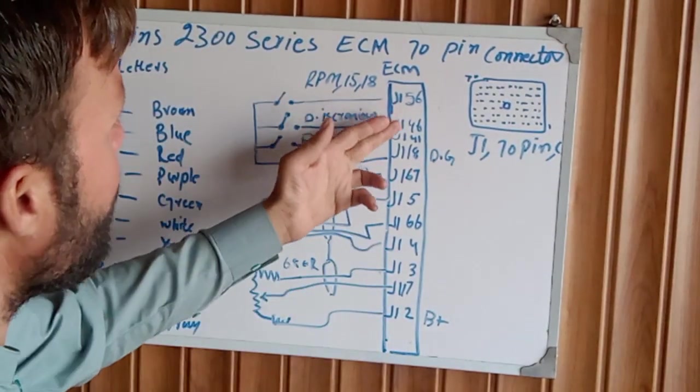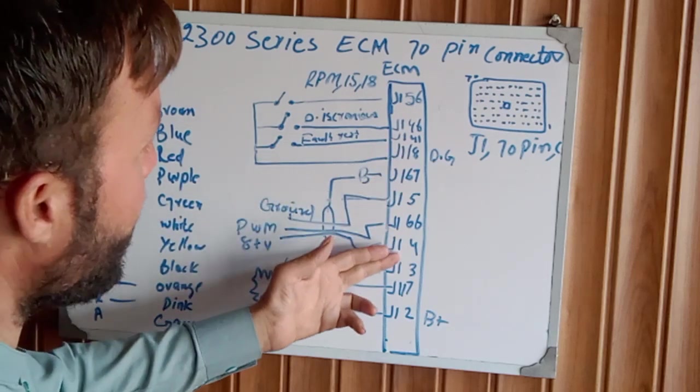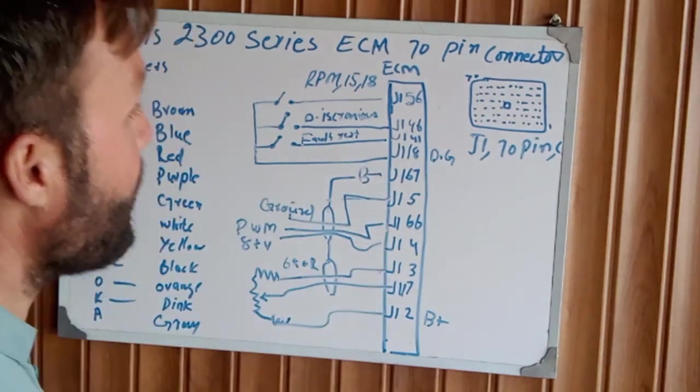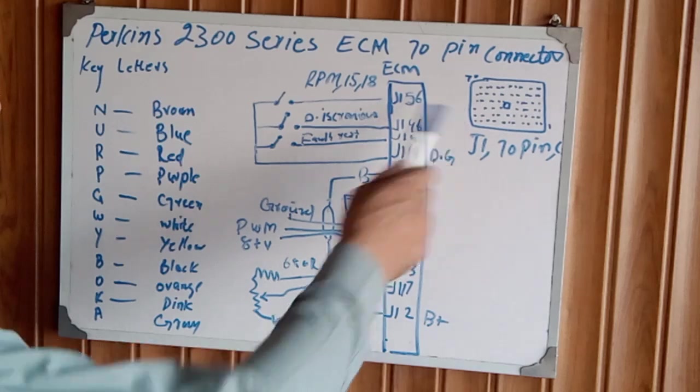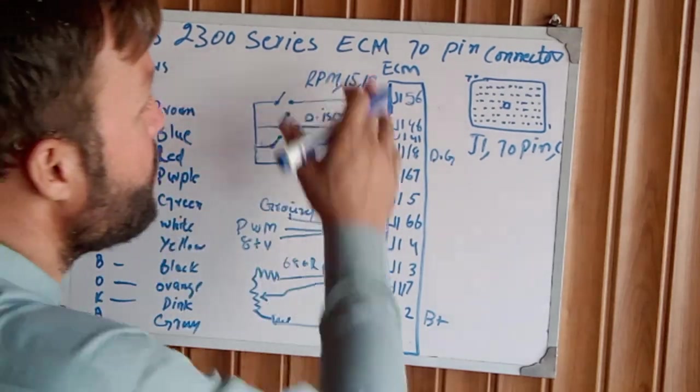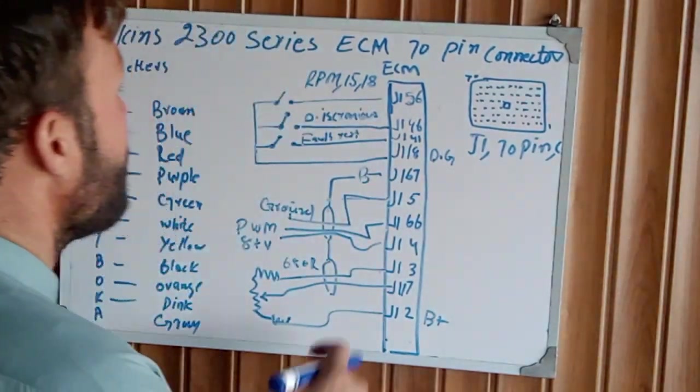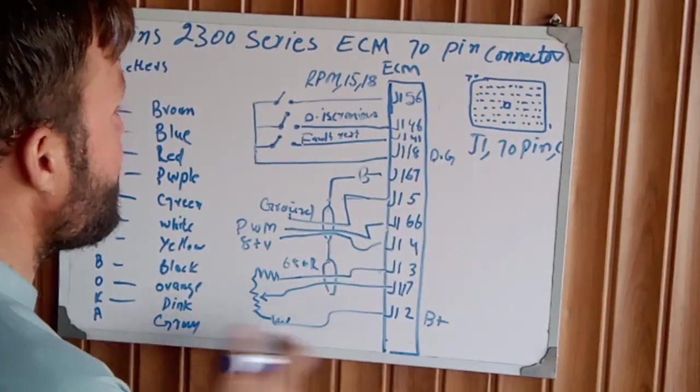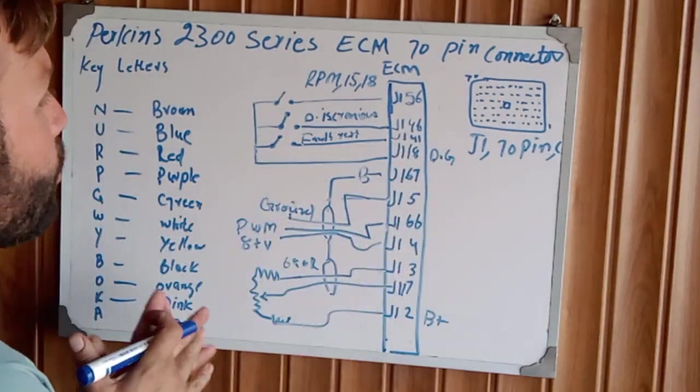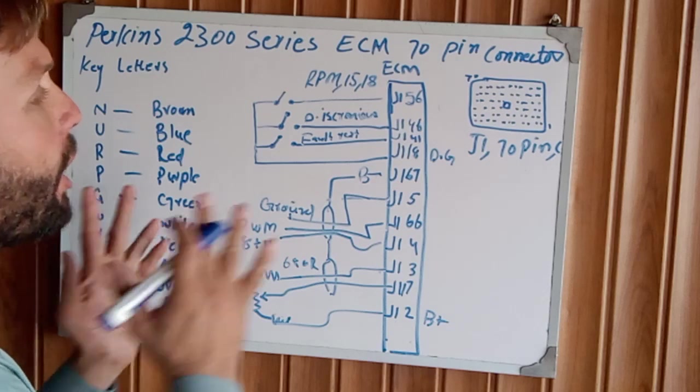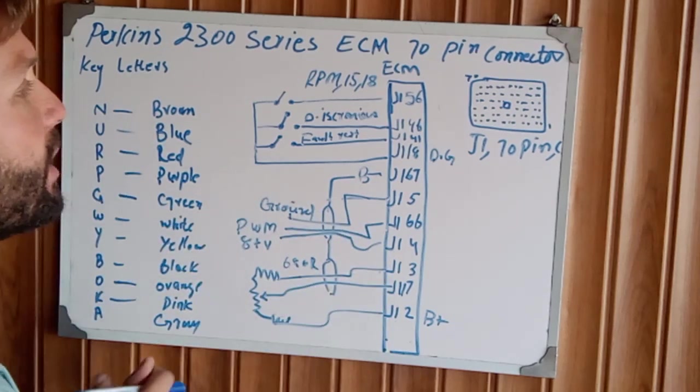We already explained 13 pins in part 1, and this is pins 1 through 12 to explain the wiring diagram of the 70-pin connector upper pins, 2300 Series ECM. This is the ACM pins out and how to wire the system, how to diagnose, and how to understand the wiring of the 70-pin connector.